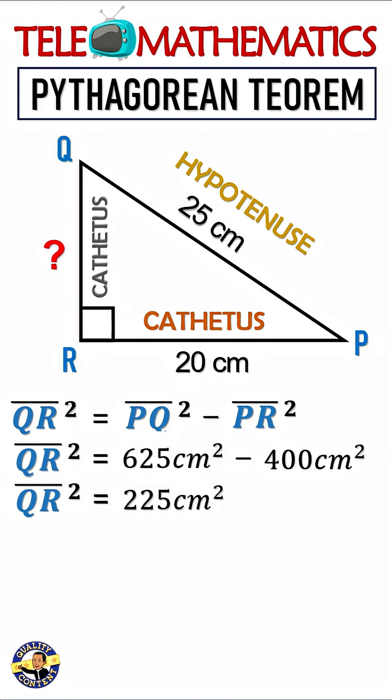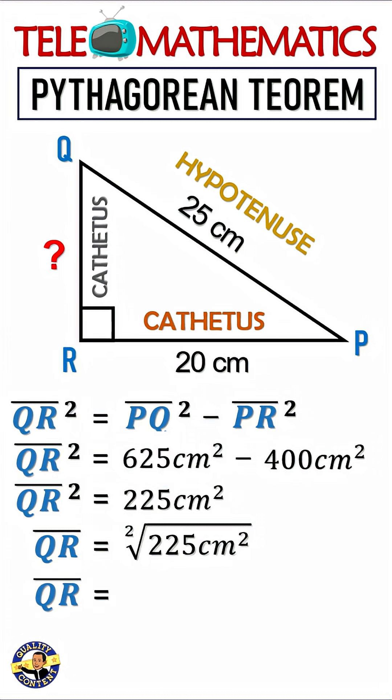Now, to finally determine the length of segment QR, we apply the inverse operation of the potentiation, which is the square root, obtaining the square root of 225 cm². Calculating the square root of 225 cm², we obtain that the length of segment QR is 15 cm.